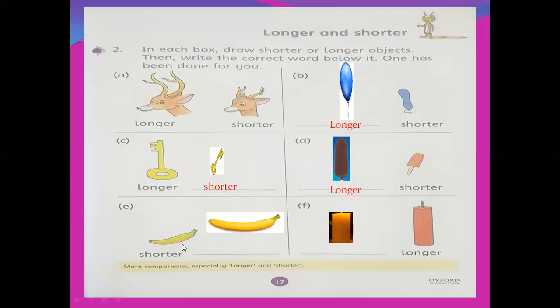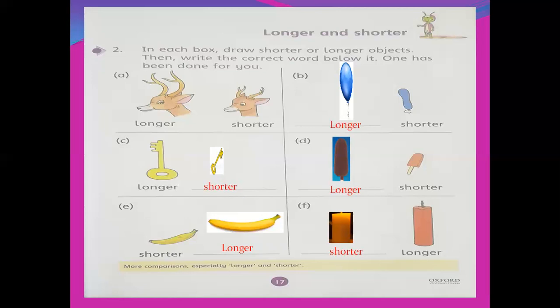Part E — banana. A shorter banana is given and you will draw a banana but longer than this one, and also write 'longer'. The last one is a candle — a longer candle is given. You will draw a candle but a little shorter. So in this page you will do two things: first you will draw, and second you will write. If shorter is given, you draw longer and write 'longer'. If longer is given, you draw shorter and write 'shorter'.